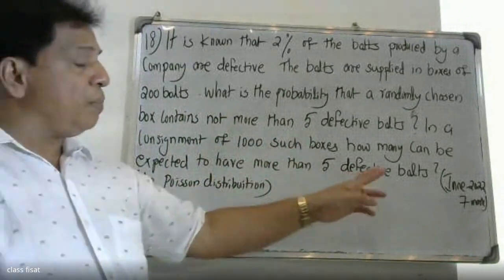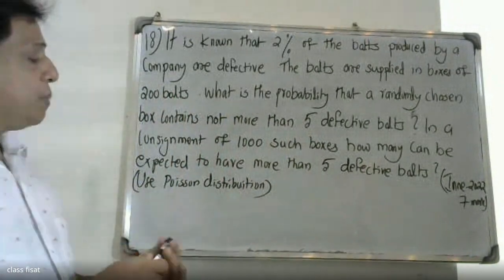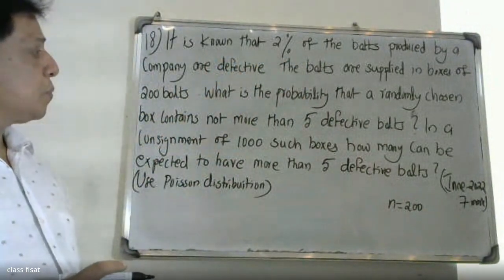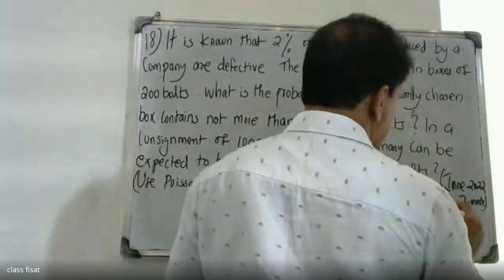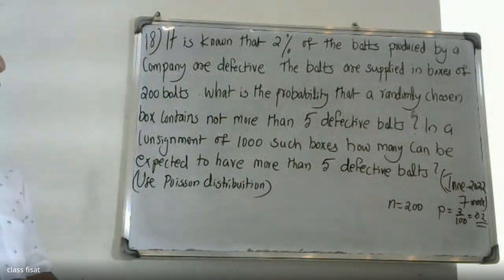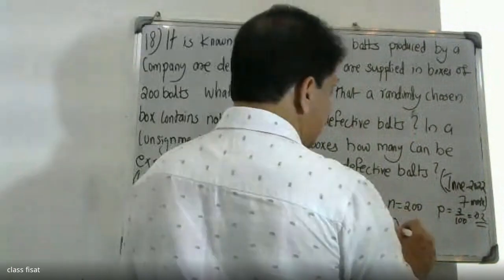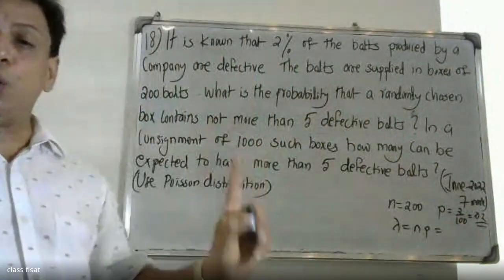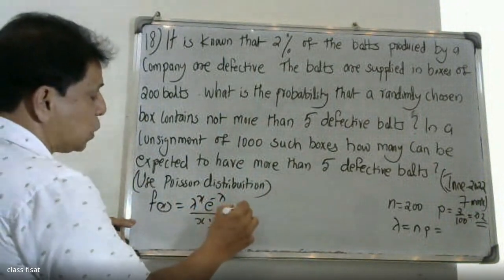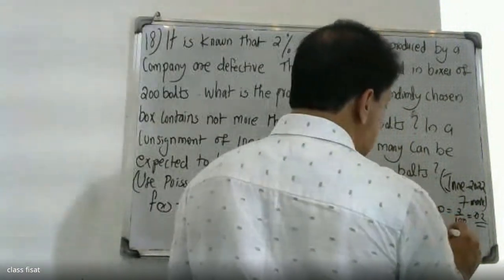Given that 2% of the boards are defective, the probability of success P is equal to 2%, that is P equals 0.02. Lambda is equal to N times P, where N equals 200 and P equals 0.02, so lambda equals 4.